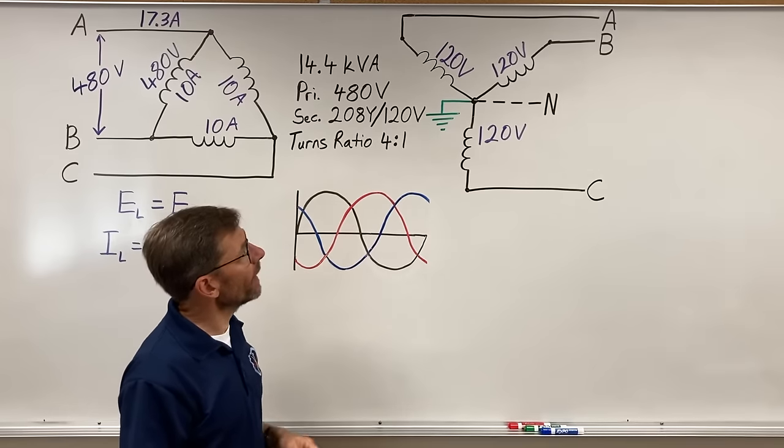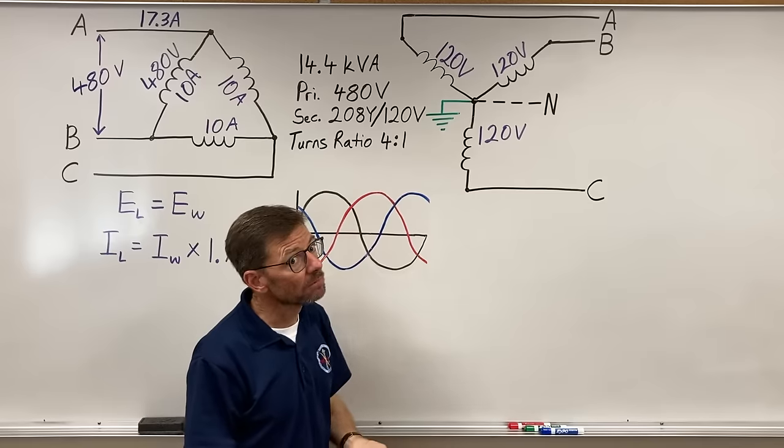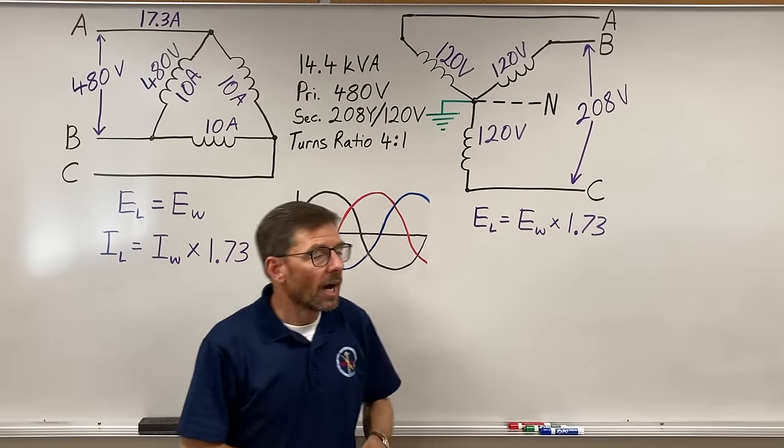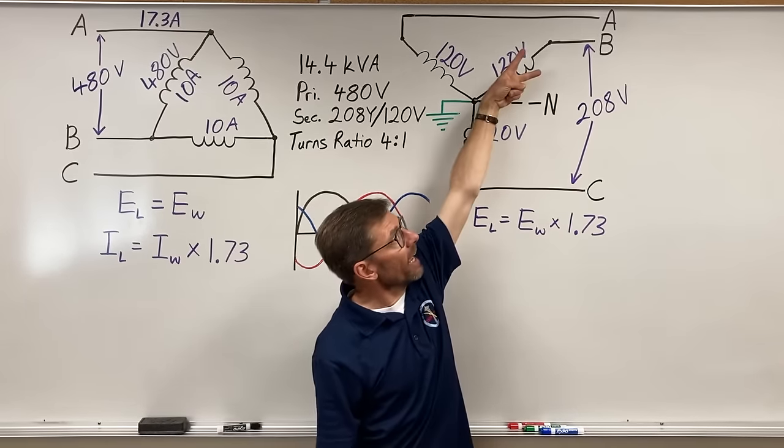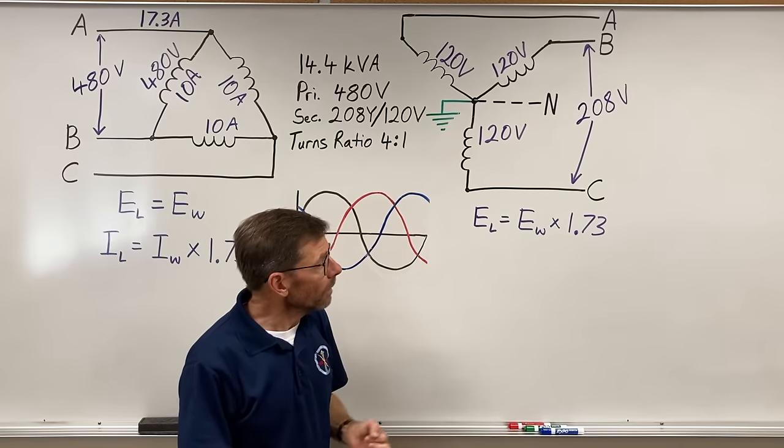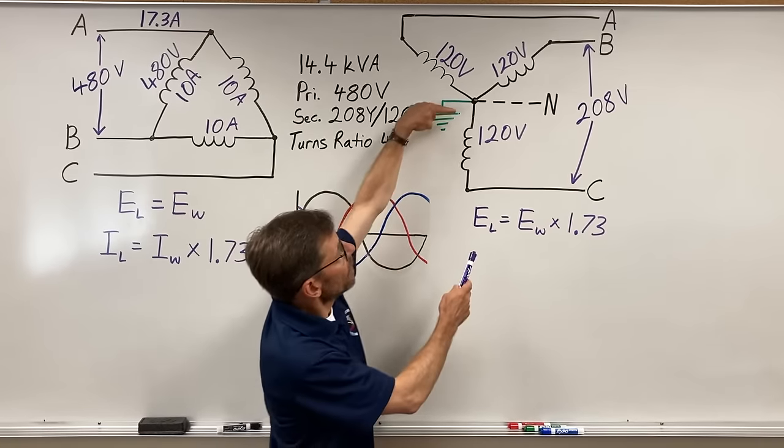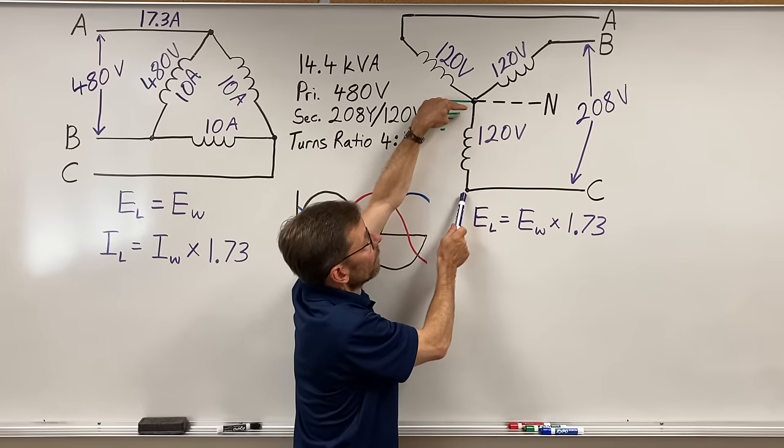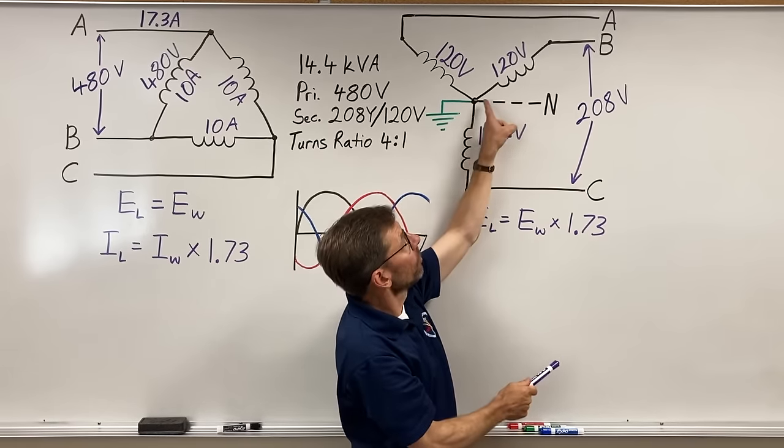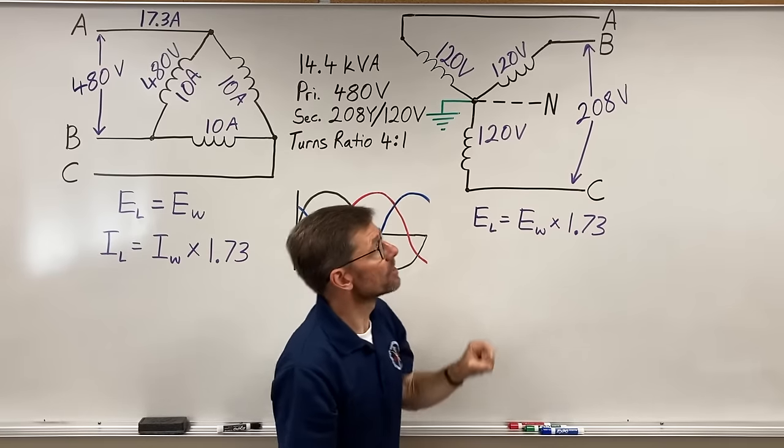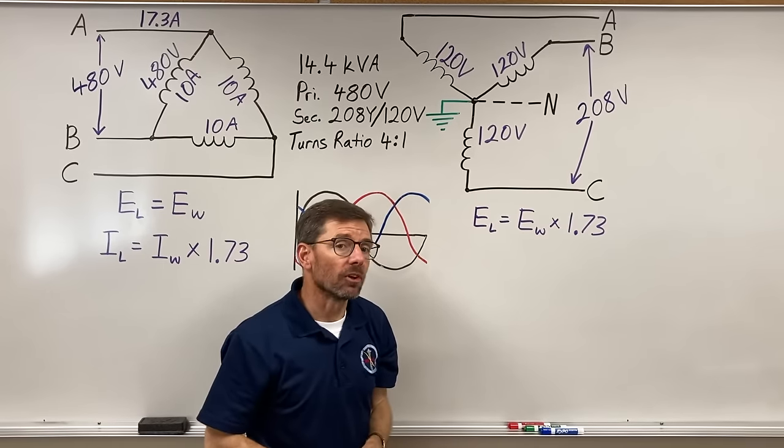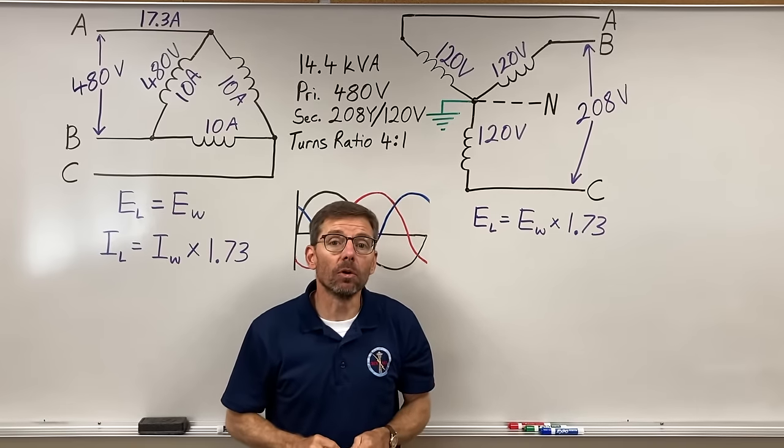Where does the 208 come in? If you'll notice, the 208 is indeed 120 times 1.73 yields 208. I just drew it between B and C, but between A and B, and also between A and C, I'm going to have 208. And why is that? Well, the 120 volts is between the neutral, the neutral point, and the phase. 120 volts neutral to C phase. 120 volts neutral to B phase. And neutral to A phase is 120 volts. That's how we power our receptacles and other 120 volt loads.